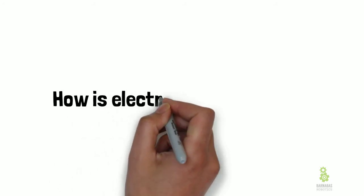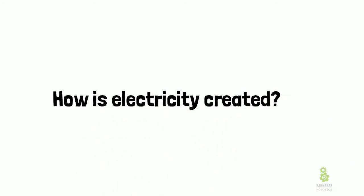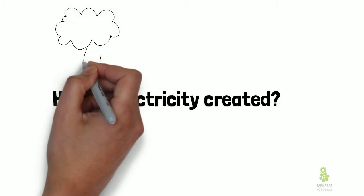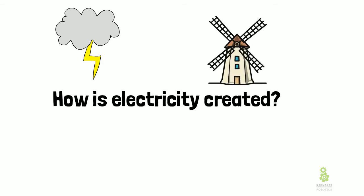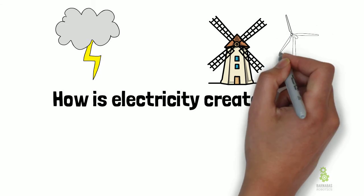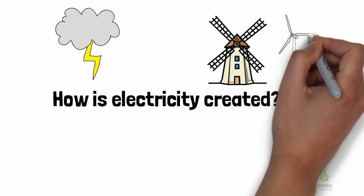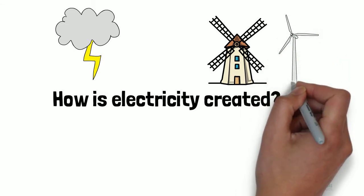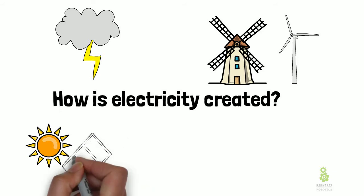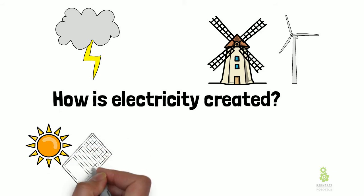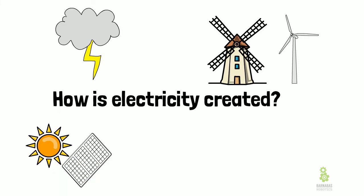How is electricity created - where does it come from? One place is clouds: clouds have electrical charge and they create lightning, which is electricity. Another place is wind - wind can actually be used to generate electricity. This is a turbine here, which is used to do that for us. Another one is the sun, which shines its rays down onto Earth.